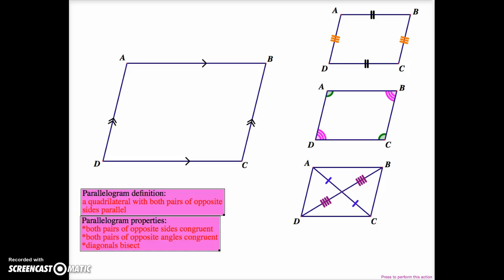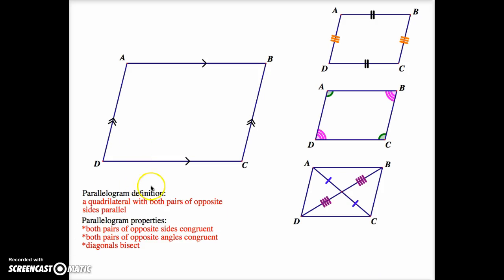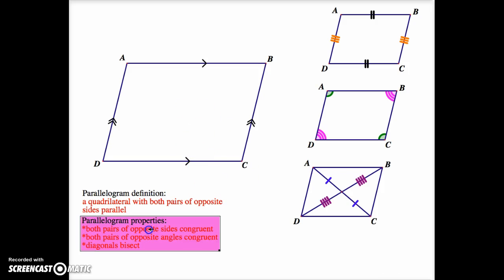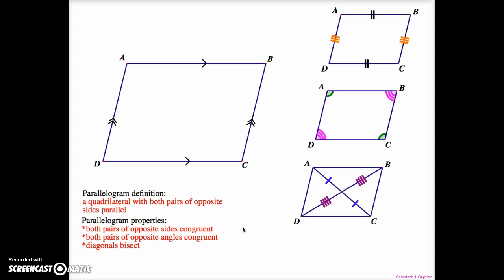In summary, a parallelogram by definition is a quadrilateral with both pairs of opposite sides parallel. Through congruency of triangles, we are able to show that both pairs of opposite sides are congruent, both pairs of opposite angles are congruent, and that the diagonals of a parallelogram bisect each other. Importantly, these are all theorems, so there is no need to memorize them.